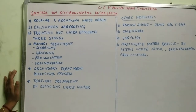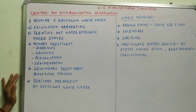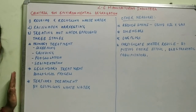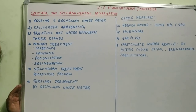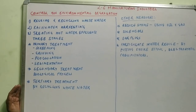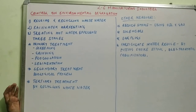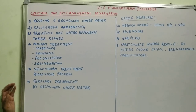Now let's look at how we can control environmental degradation and pollution. Reusing and recycling wastewater is necessary — whatever wastewater is there, even in our homes, we should reuse and recycle it. Rainwater harvesting should also be done so that underground water usage is minimized, and rainwater can be used in houses or in industries as well.